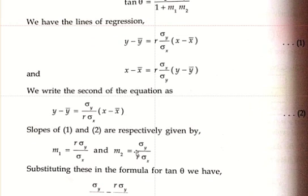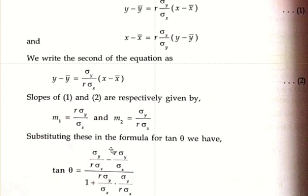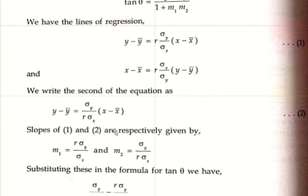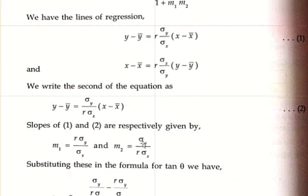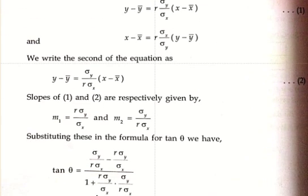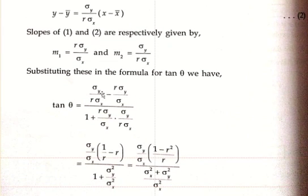Substituting these values in the formula tan theta equals m2 minus m1 divided by 1 plus m1 into m2. Tan theta equals: numerator is sigma y divided by r into sigma x minus r into sigma y divided by sigma x, denominator is 1 plus m1 into m2. In the numerator, take sigma y divided by sigma x as the common factor.